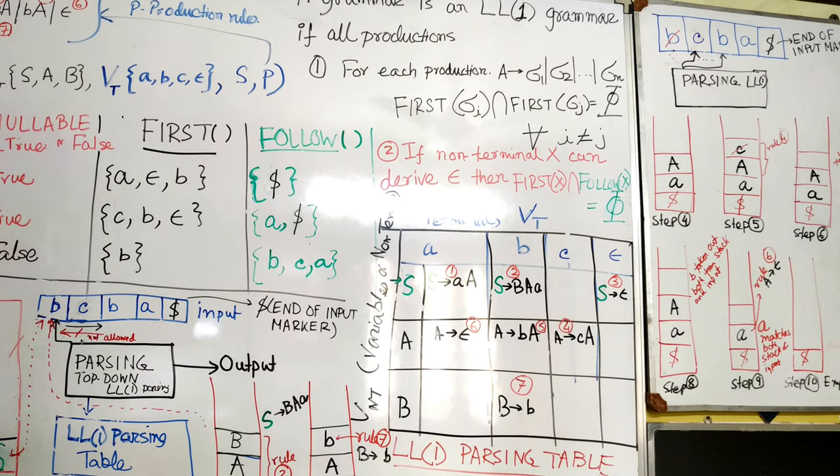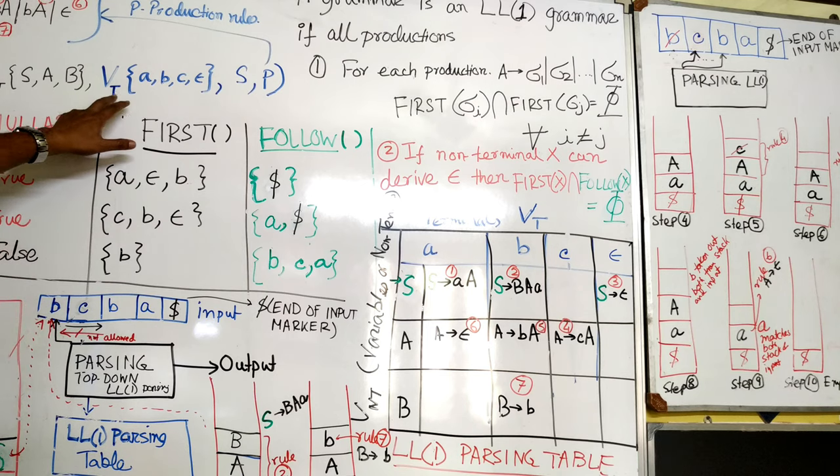These are the grammar. V is a non-terminal or we can call it variable. S is the start variable. It should be preferred to begin. And these are the terminals: A, B, C, E. S is the start variable again.